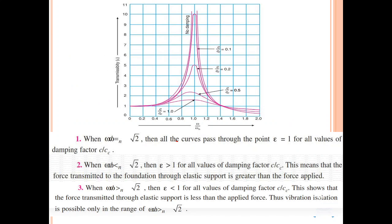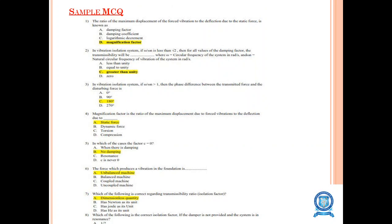When omega/omega_n equals root 2, all curves pass through the same point and ε equals 1 for all values of damping factor c/cc. When omega/omega_n is less than root 2, ε is greater than 1, meaning force transmitted through elastic support is greater than the force applied. When omega/omega_n is greater than root 2, ε is less than 1, meaning force transmitted is less than applied force. Thus vibration isolation is possible only when omega/omega_n is greater than root 2.